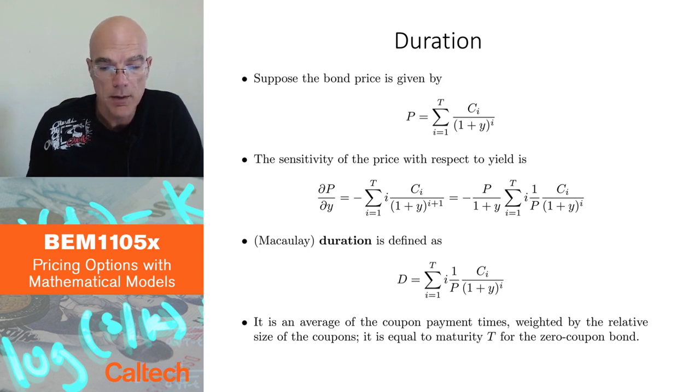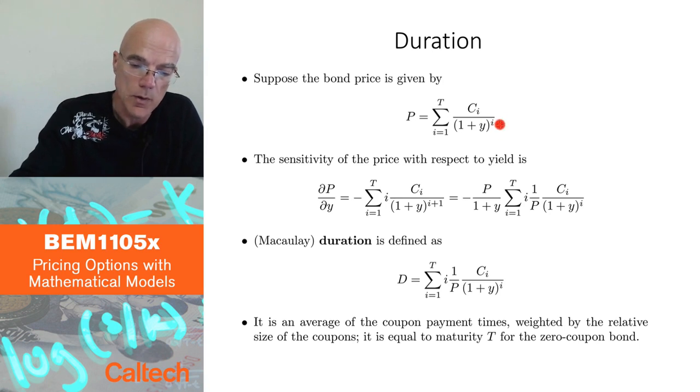For the bond, the derivative is, this is like (1+Y) to the minus i, so minus i goes down and then you get minus i plus 1 as the power, so I get (1+Y) to the (i+1) here. That's simply taking the derivatives here with respect to Y.